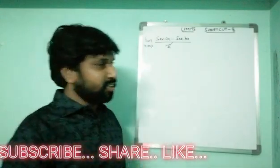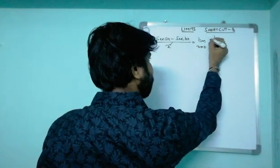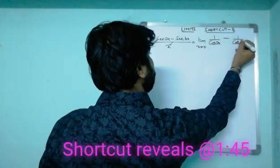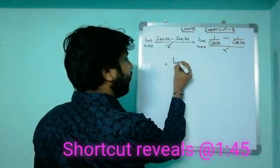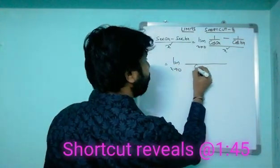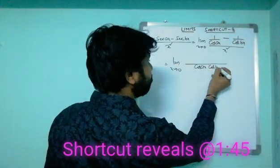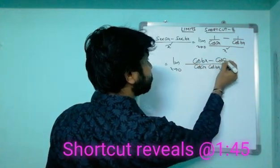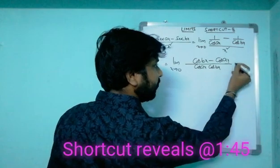This is equal to limit x tends to zero — secant ax can be written as 1/cos(ax) minus 1/cos(bx) — whole divided by x square. Taking LCM as cos(ax)·cos(bx), the numerator becomes cos(bx) minus cos(ax).